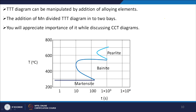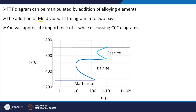TTT diagrams can be manipulated by the addition of alloying elements. For example, the addition of manganese divides the TTT diagram into two bays — instead of one single curve, you now see two separate curves. You will be able to appreciate the importance of this when we discuss CCT diagrams. We will see why this is very important.